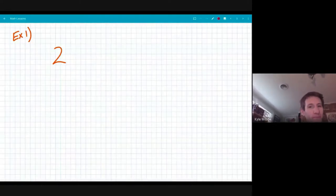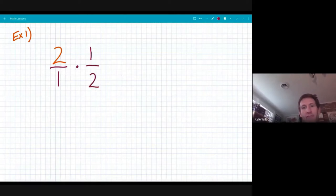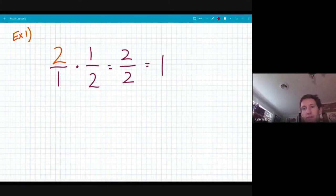So here's an example. The number is two. And we want to find the reciprocal of two. It's not the opposite. It's the reciprocal. I know that two is the same as saying two over one. And what could I multiply to get a product of one? Well, one half because two times one is two and one times two is two. And that gives me one. So the reciprocal of two is one half.